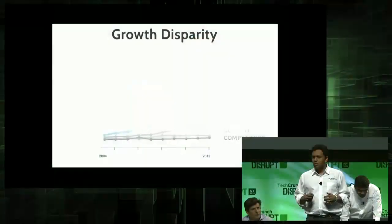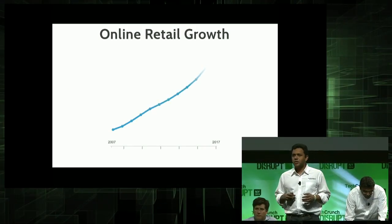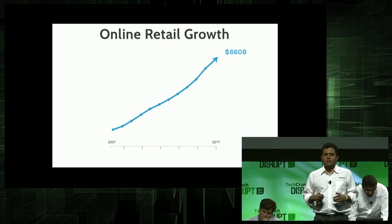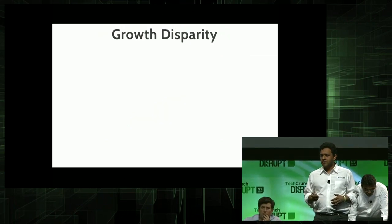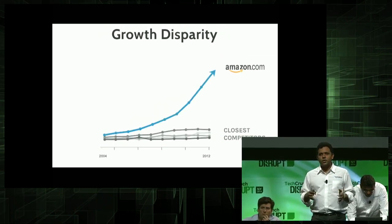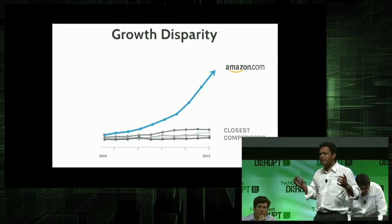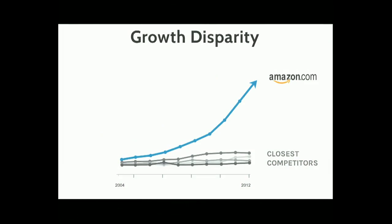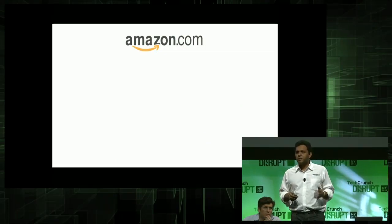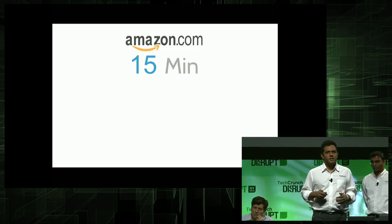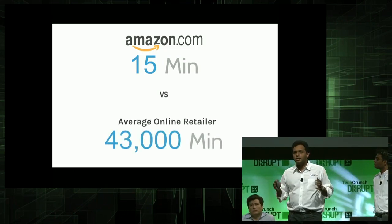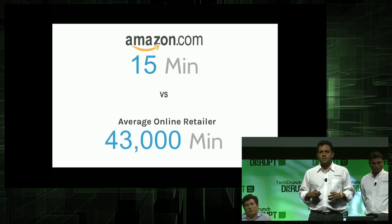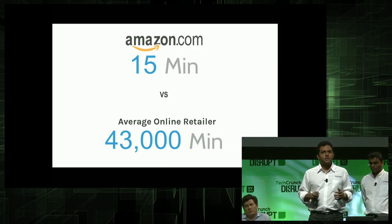Before I tell you about Boomerang Commerce, let's start with something obvious: online retail sales in the U.S. are exploding. Something that's not so obvious — not everyone is growing at the same rate. I worked at Amazon for many years, and there's really one huge reason why Amazon has been able to consistently outperform its competitors. Amazon has built a phenomenal analytical engine that allows them to make pricing decisions every 15 minutes. An average retailer takes 43,000 minutes — that's one month.